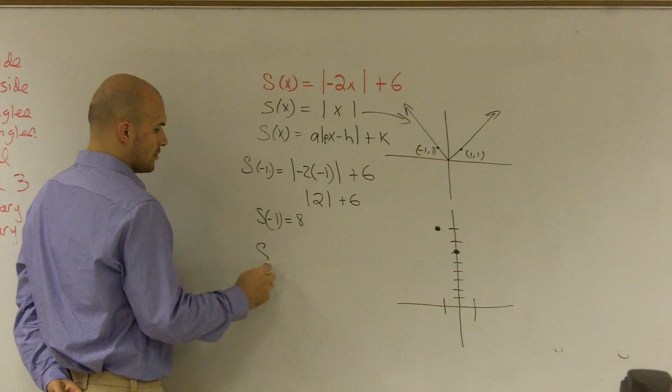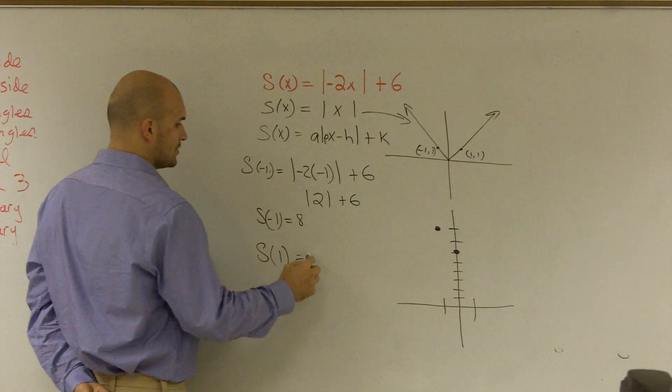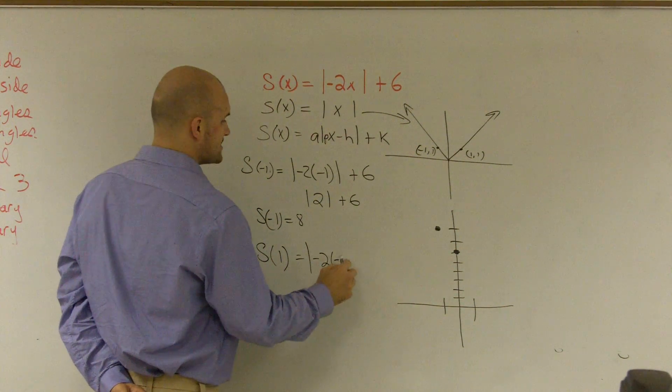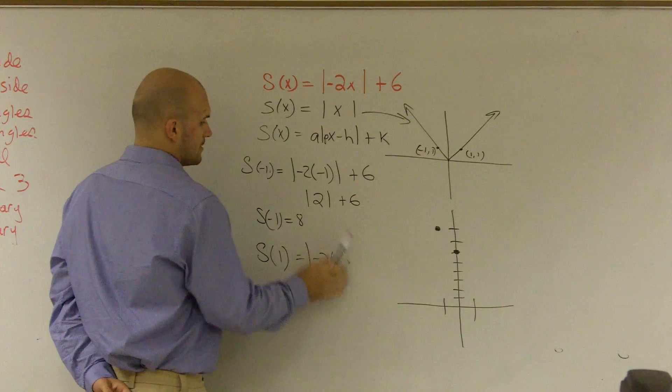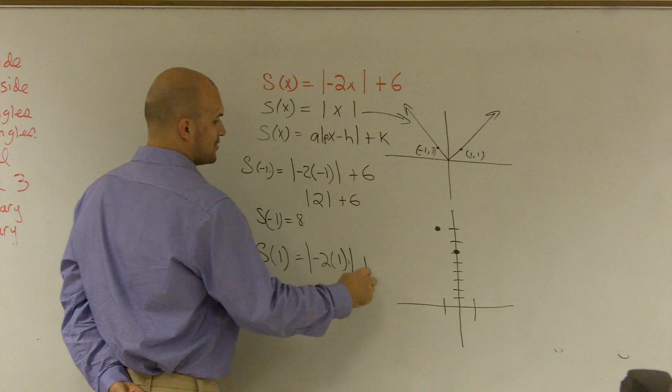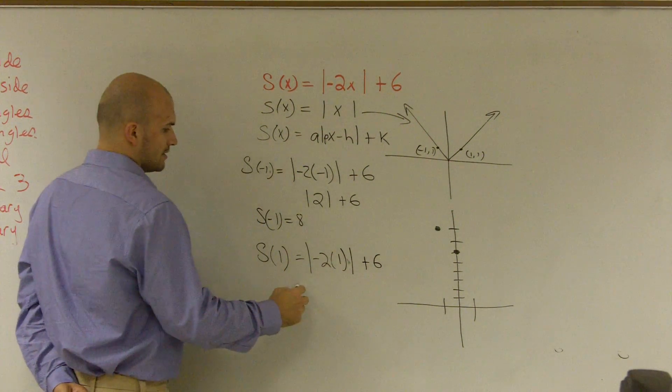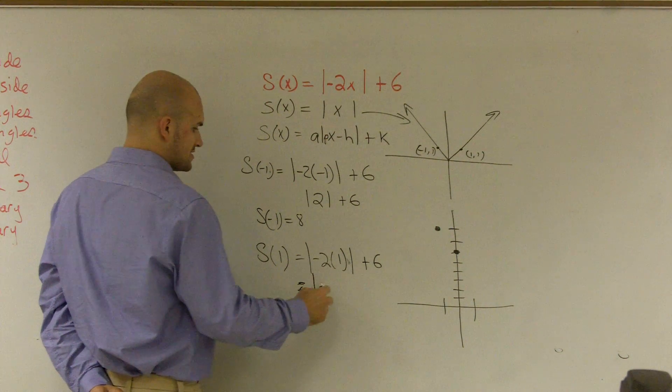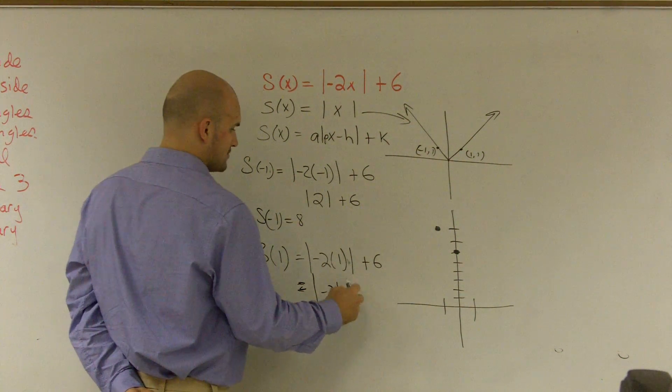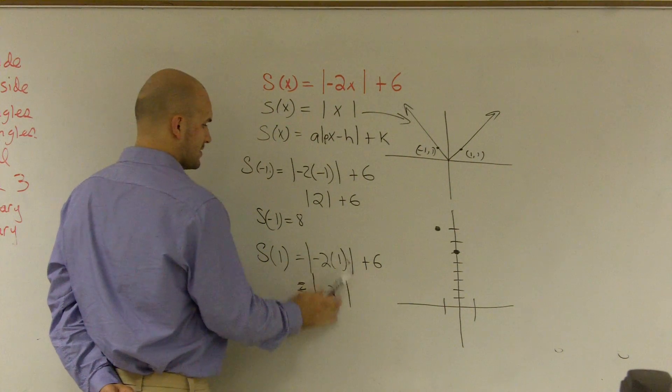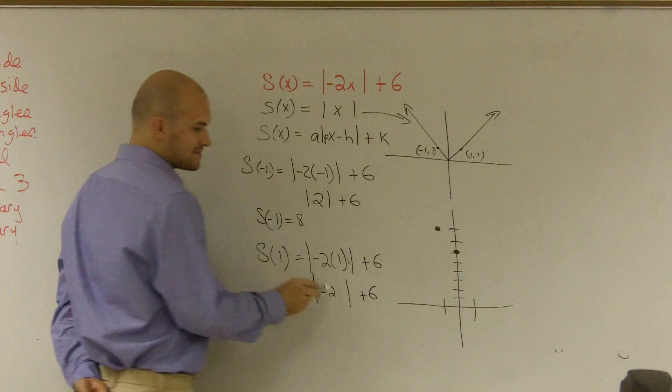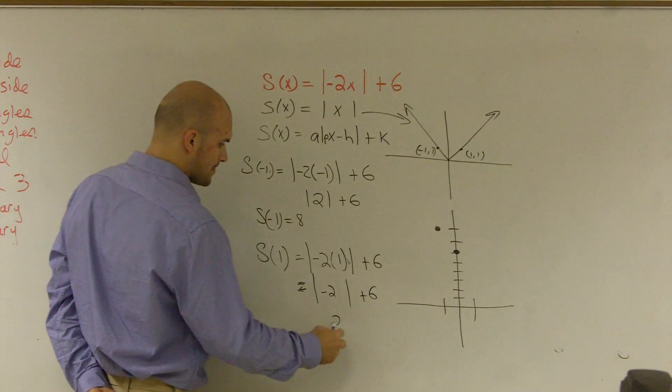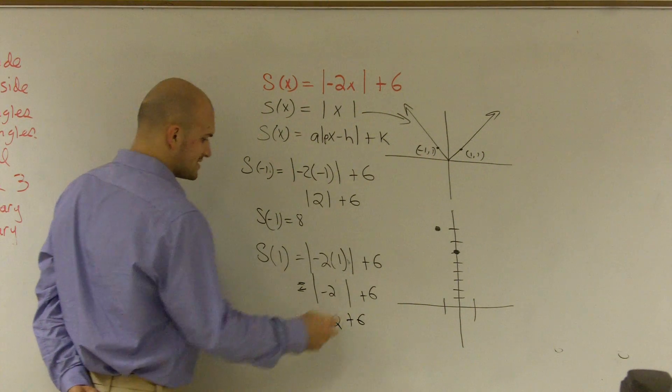So negative 1 goes up to 8. And then I'll do s of 1 equals negative 2 times 1 absolute value plus 6. This becomes a negative 2 absolute value, plus 6, absolute value of negative 2 is obviously 2. 2 plus 6 is 8.